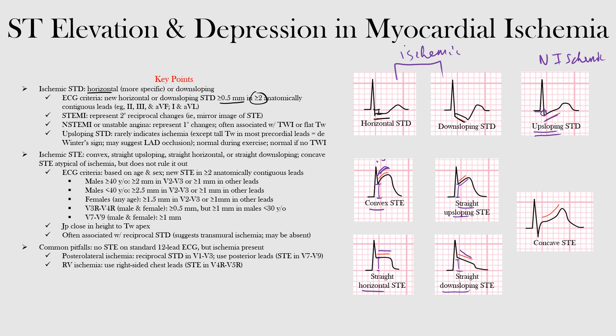Concave ST elevation is less likely due to ischemia but does not rule it out. Concave ST elevation is actually common in the general population, especially in young males — the majority of males under 30 have concave ST elevation in leads V2 and V3. These benign concave elevations have greater distance between the J point and the T wave apex. Concave ST elevation may also be seen with tall T waves in hyperkalemia, early repolarization, or early phases of ischemia.